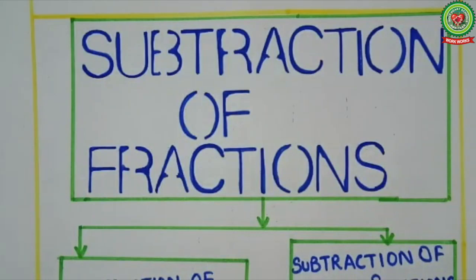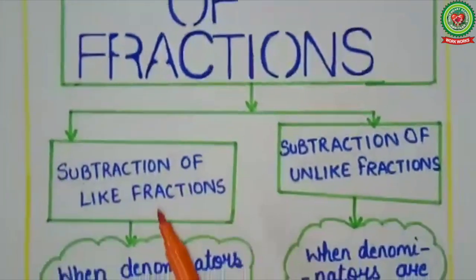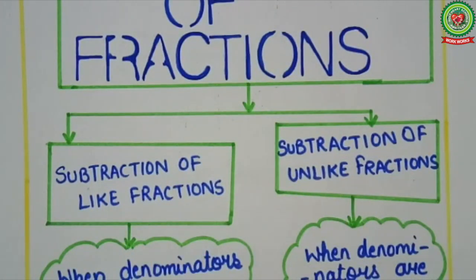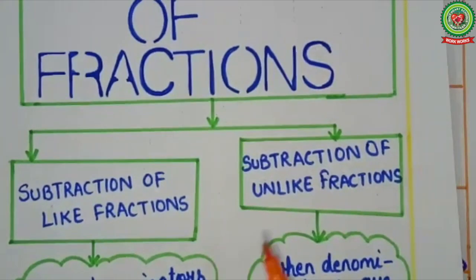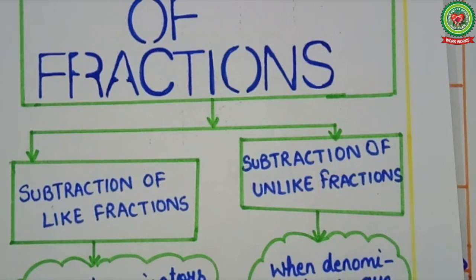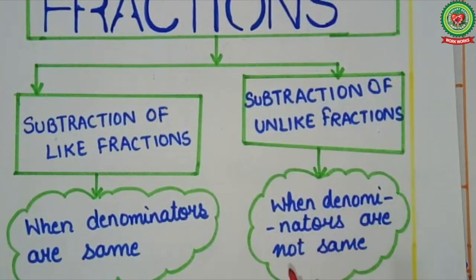In subtraction of fractions, there are two types. Type 1 is subtraction of like fractions, which we have already done. Type 2, which we will do today, is subtraction of unlike fractions.